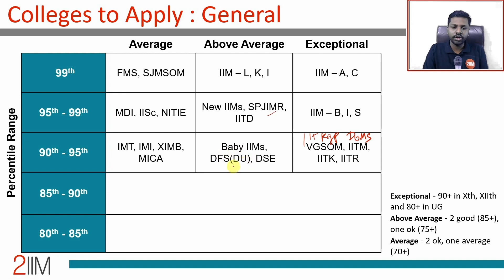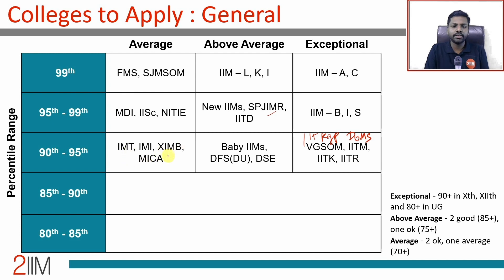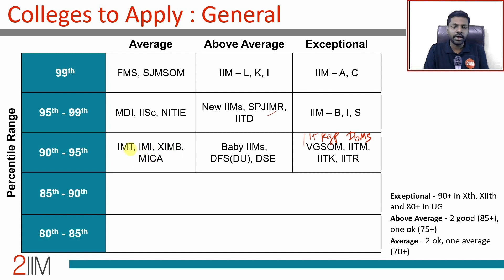Also in the 90 to 95 range: Delhi University's Department of Financial Studies and Delhi School of Economics for above average academic profiles. For someone with average academics and 90 plus percentile, you are looking at IMT Ghaziabad, IIMI Delhi, XIM Bhubaneswar, and MICA. MICA takes admissions through MICAT, and MICAT 2 is still open — you need 90 plus in CAT to be eligible for MICA. XIMB takes through XAT and CAT as well.